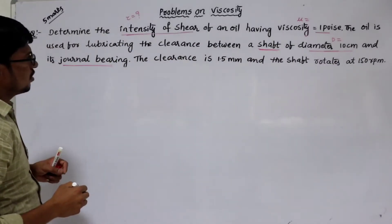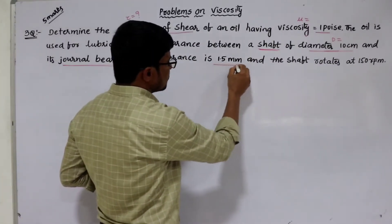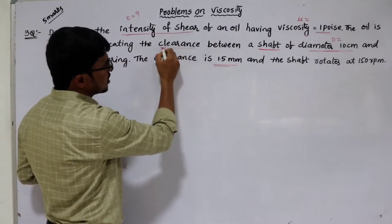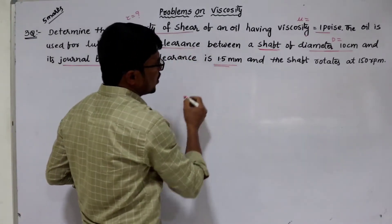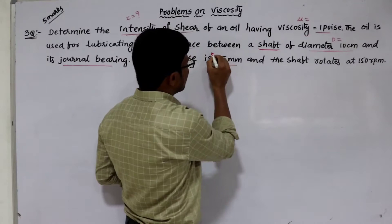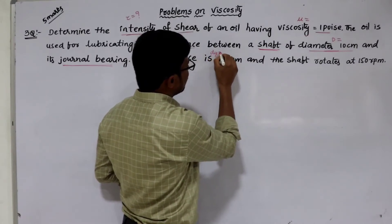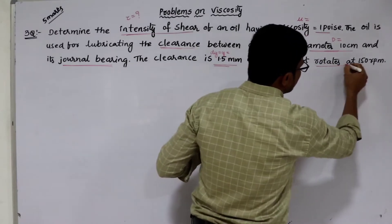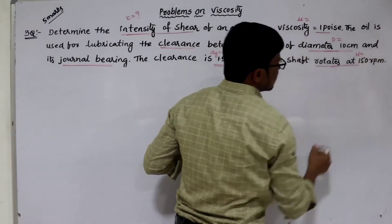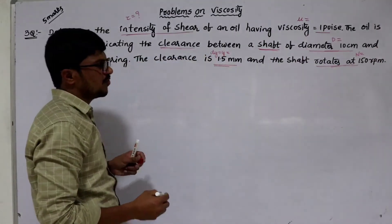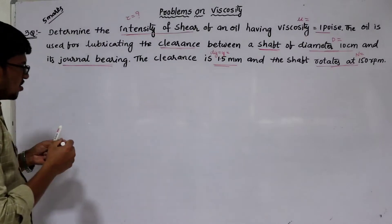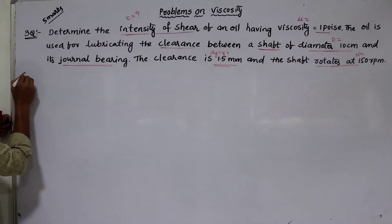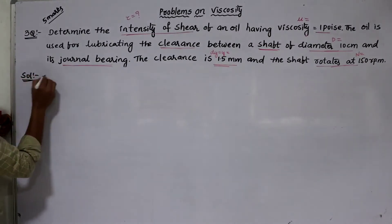The clearance — that is the gap between the shaft and journal bearing — is given as 1.5 millimeters. We can denote it as dy or y equal to 1.5 millimeters. The shaft rotates and the speed of the shaft is given, denoted by capital N equal to 150 RPM. Now let's list the given data.